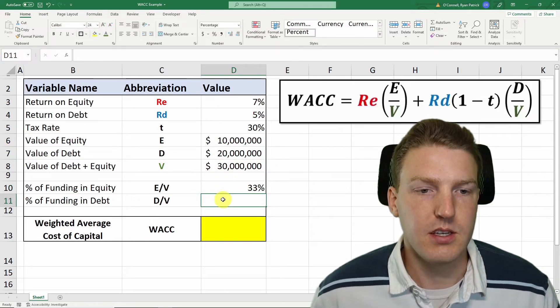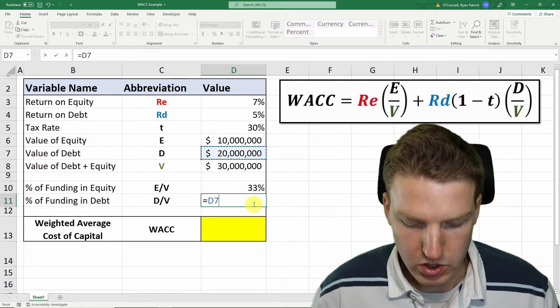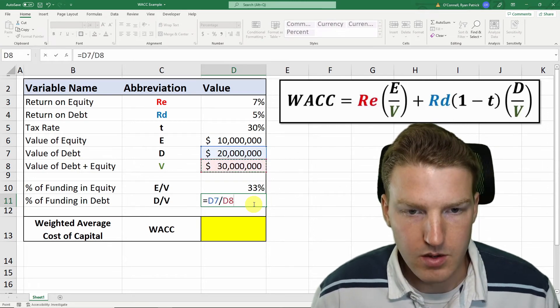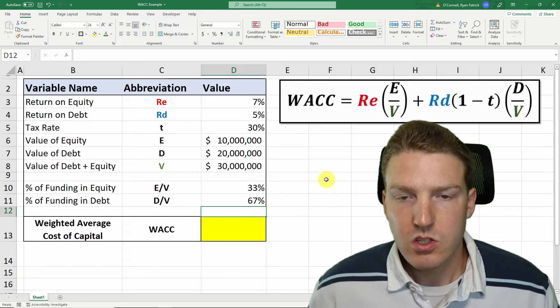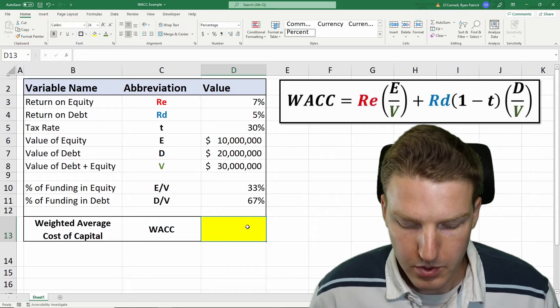We find 33% of our funding is in equity. We also need to find the percent of funding that's in debt, which is the $20 million divided by the $30 million. So now we have all of the variables we need to calculate weighted average cost of capital.